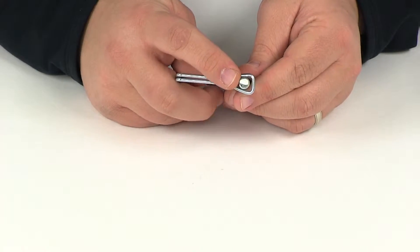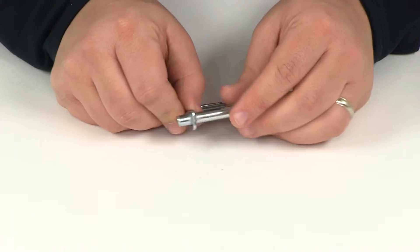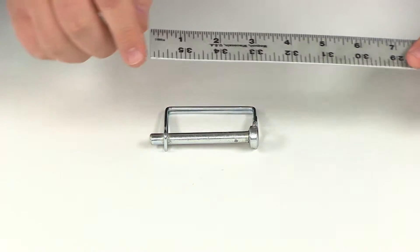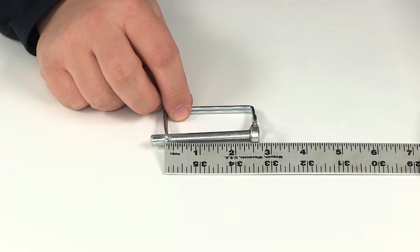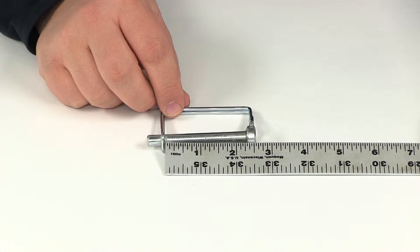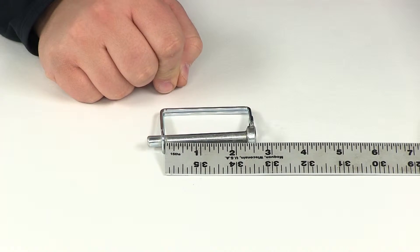Now the pin diameter is going to measure five sixteenths of an inch. If we take a measurement of the amount of usable length that this one provides, measuring from this point here to the bottom of the collar, it looks like that's going to give us a measurement of about two and one quarter of an inch.